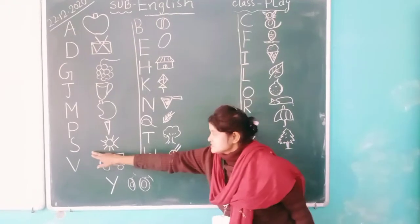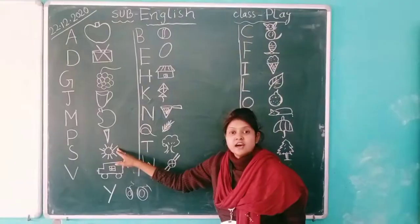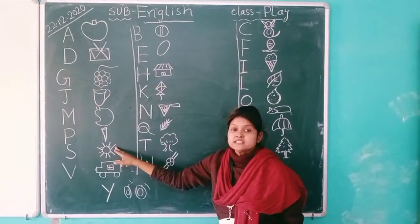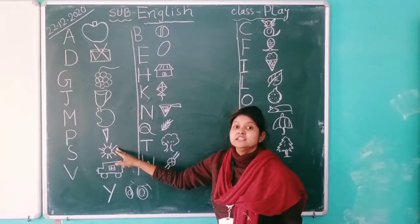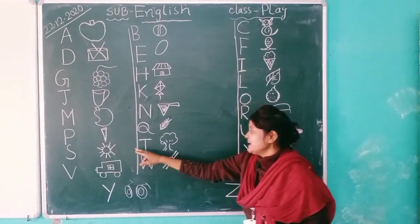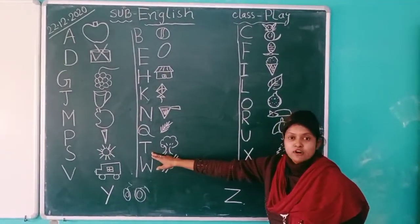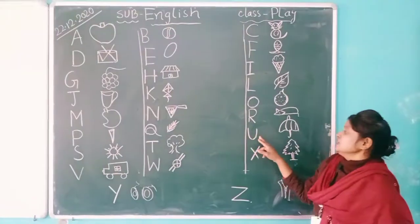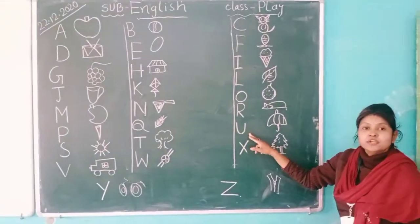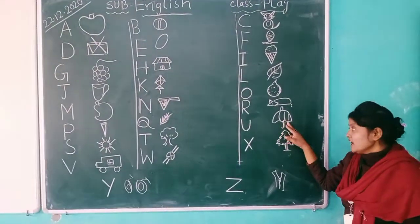S. S for sun. What is the color of sun? Yellow. Next, T. T for tree. U. U for umbrella.